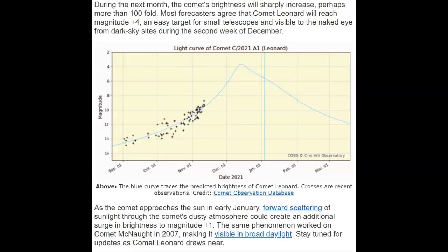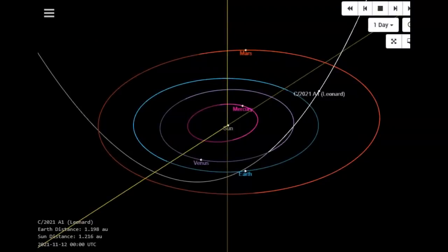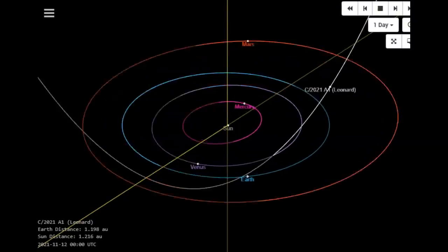The magnitude is on the left, the dates are on the bottom, and the little black checkmarks are the observed brightnesses. It's going to peak around December 12th. As the comet approaches the sun in early January, forward scattering of sunlight through the comet's dusty atmosphere could create an additional surge in brightness to magnitude plus one.